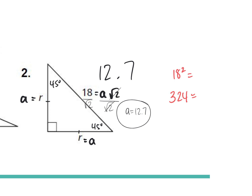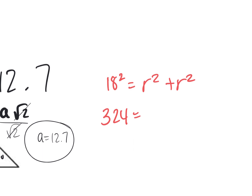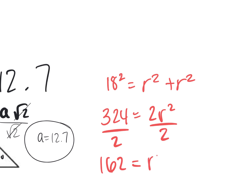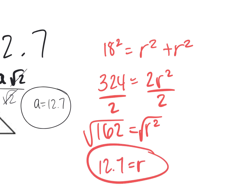Okay, let's see why we're able to do that. 18 squared, my hypotenuse, should be equal to R squared plus R squared — my A and my B — right? R squared plus R squared is 2R squared. Then divide by 2, you get 162 equals R squared. Take the square root of both sides, and you get 12.7 equals R. You'll get the exact same answer regardless of how you do it.